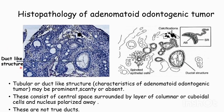Tubular or duct-like structures may be prominently seen in Adenomatoid Odontogenic Tumor, or may be scanty or even absent in some cases. These consist of a central space surrounded by a layer of columnar or cuboidal cells where the nucleus is polarized away from it. These are not true ducts.